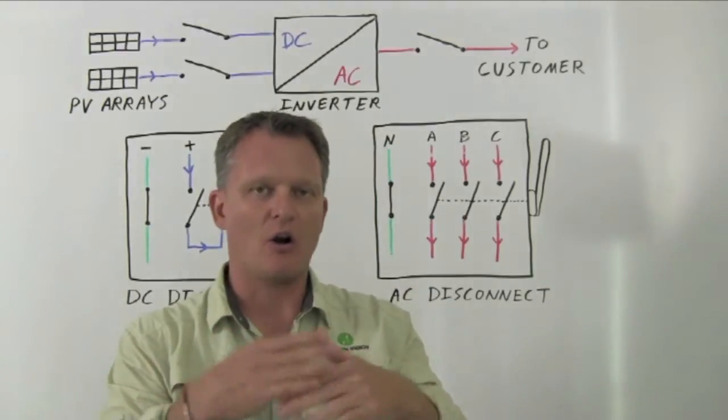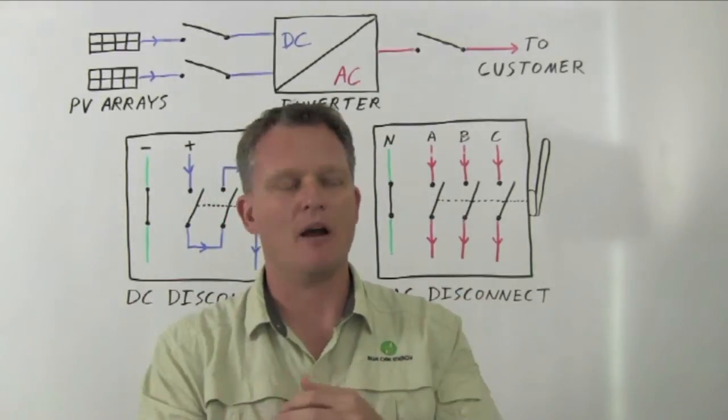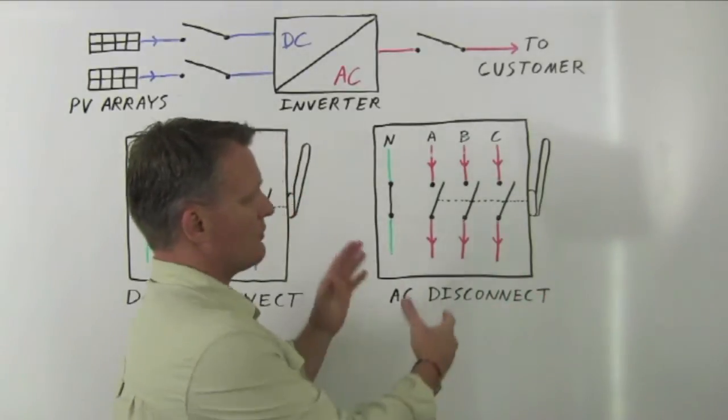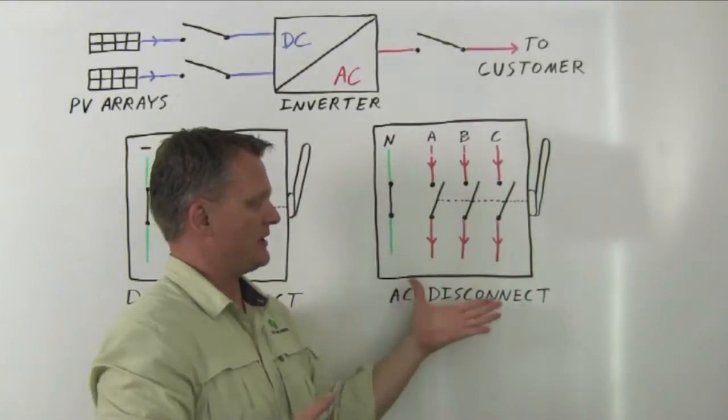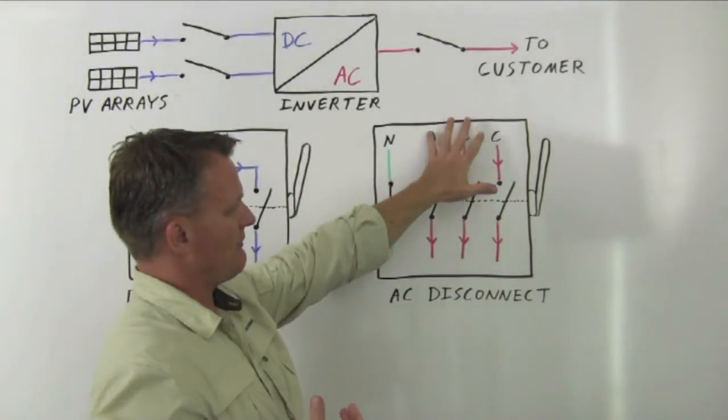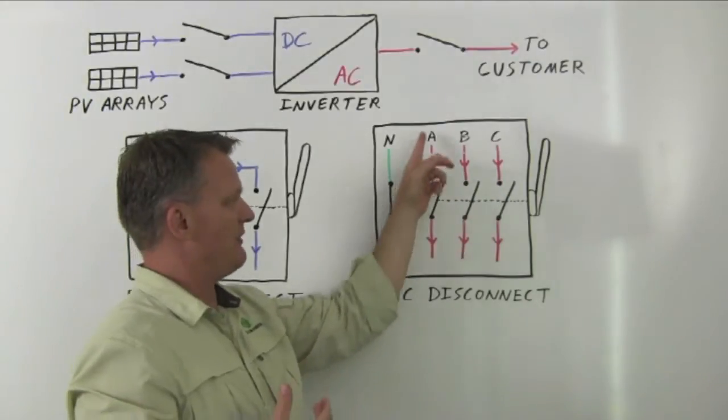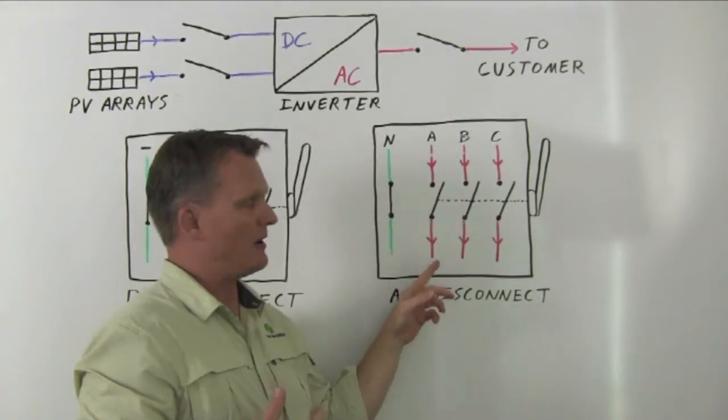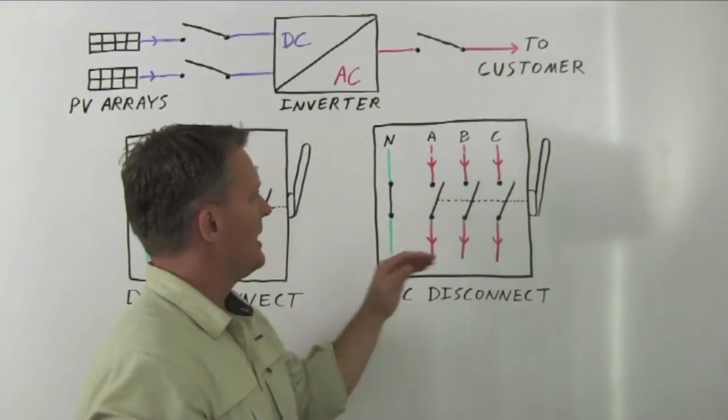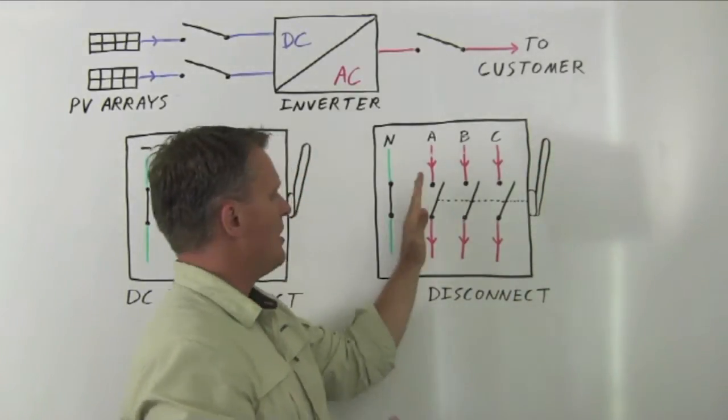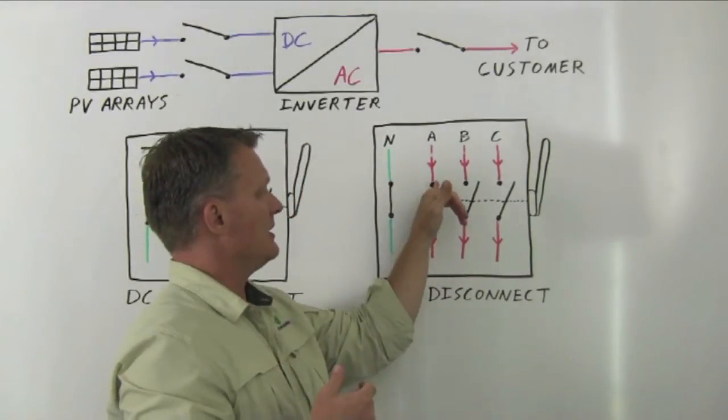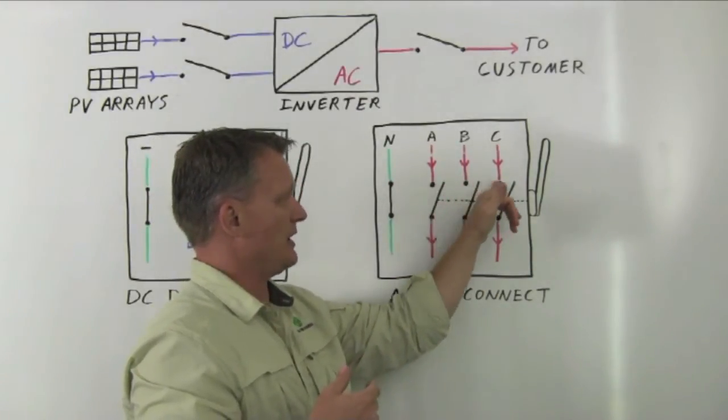Now, most commercially available disconnect switches are designed for AC current. And here's a typical wiring schematic of an AC disconnect where you've got your three phases coming in here. Each phase has a switch—you have A, B, and C, plus a neutral which is typically not switched. When you pull the handle on this disconnect, all three of these switches open up.